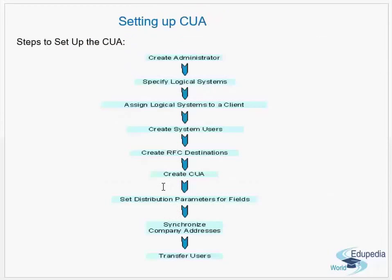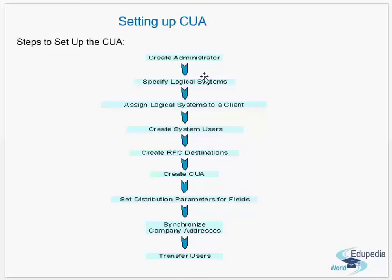Now, setting up CUA — how do you set up central user administration? The steps are: create systems, assign logical systems to a client, create system users, create RFC destinations, create central user administration, and set distribution parameters for fields.